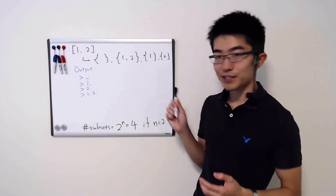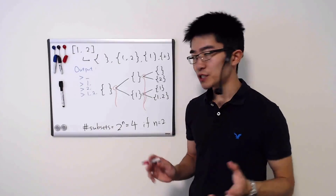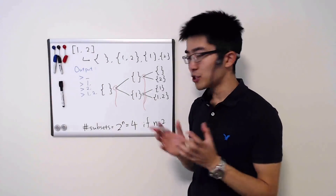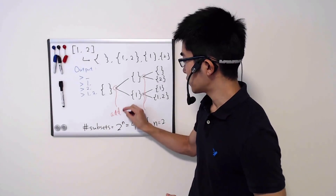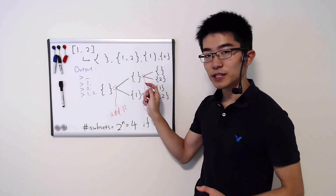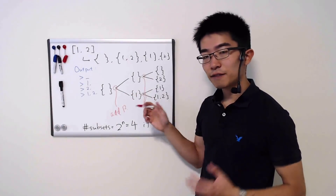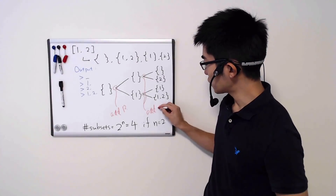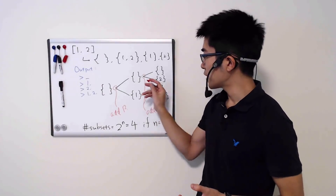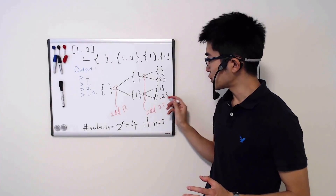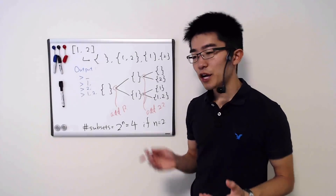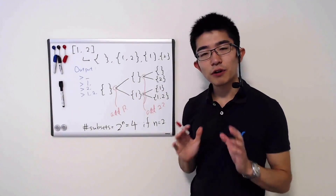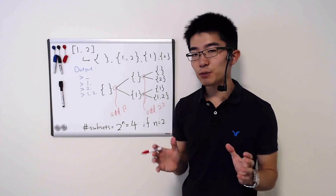If we visualize this process, it might look like a recursion tree. With this idea, we can construct all subsets by starting with an empty set. We ask: should we add one to the empty set? If no, we still have an empty set. If yes, we have a set of one. After that, for each of those sets, we ask: should we add two? If yes, we get a set of two, or a set of one and two. This way we can construct all four subsets. When you see this graph, you might say it looks like a recursion tree, so maybe we can solve this using recursion.